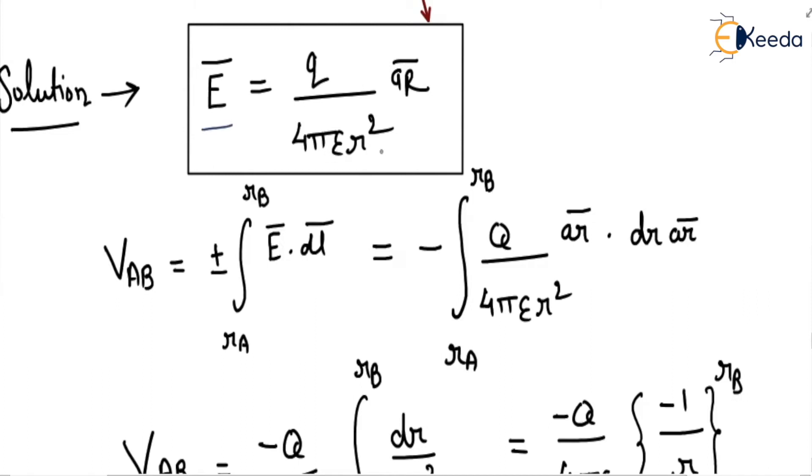The potential difference VAB is minus the integration from rA to rB of E·dl. We will take minus because we are going against the electric field. So minus integration from rA to rB: q/(4πε₀r²) âr vector, and dl vector is dr âr.